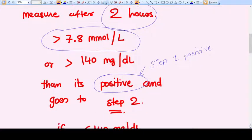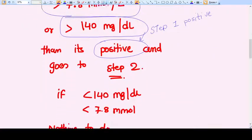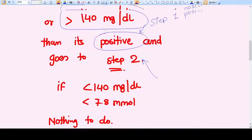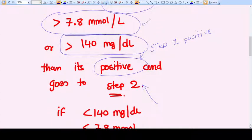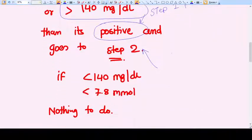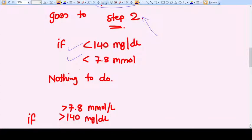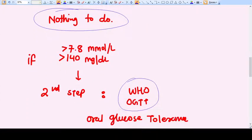If it comes more than 7.8 millimole per liter or more than 140 milligram per deciliter, then this is called step one positive. Now these patients are taken for step two. If the glucose level is less than 140 mg per dL or less than 7.8 millimole per liter, then nothing to do. Patient is diagnosed as not having GDM.